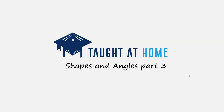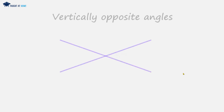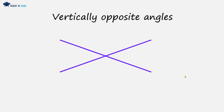Shapes and Angles part 3. Let's look at angles — specifically vertically opposite angles. We have two lines that intersect, and we have an intersection point we call the vertex.